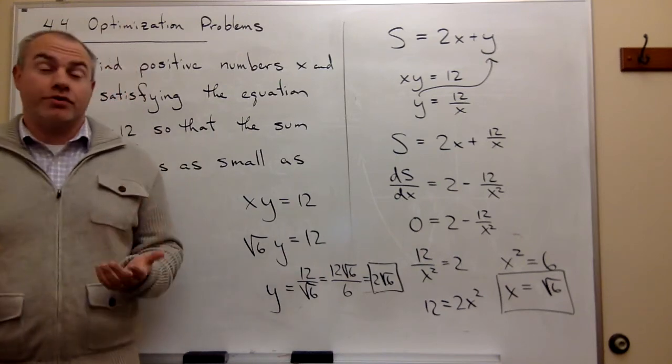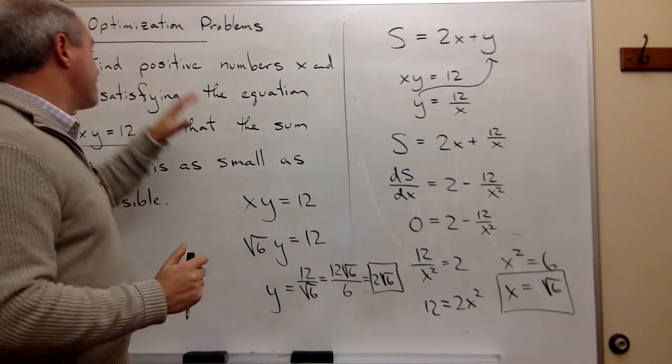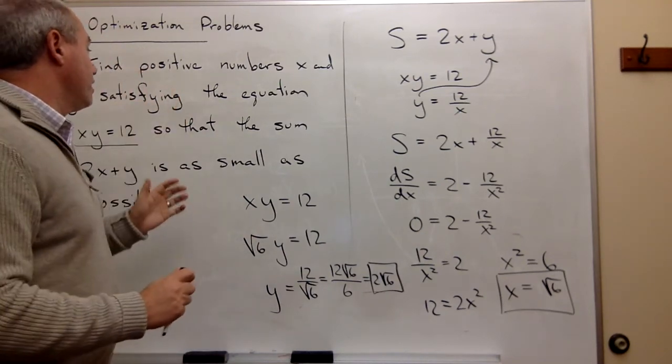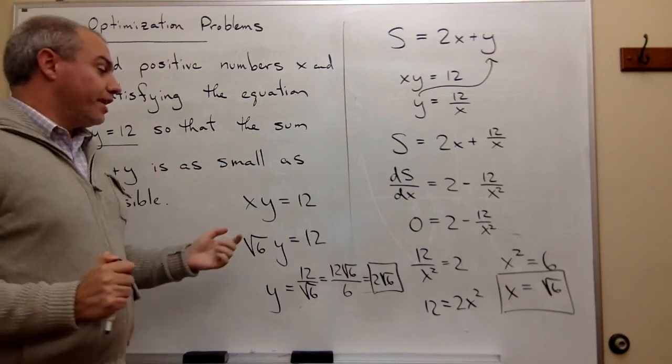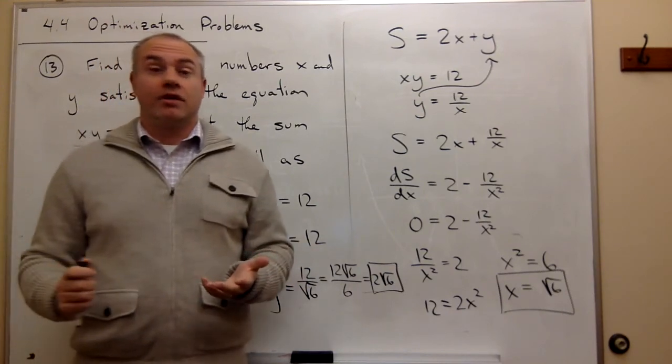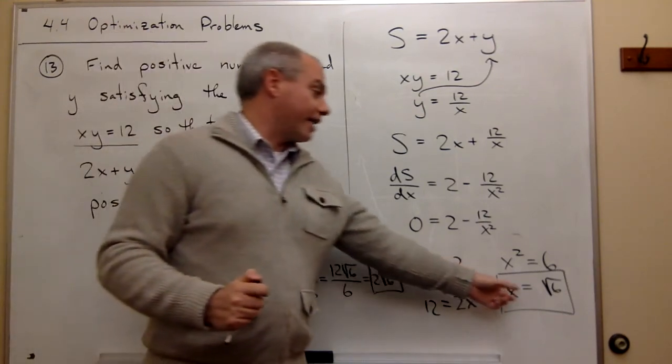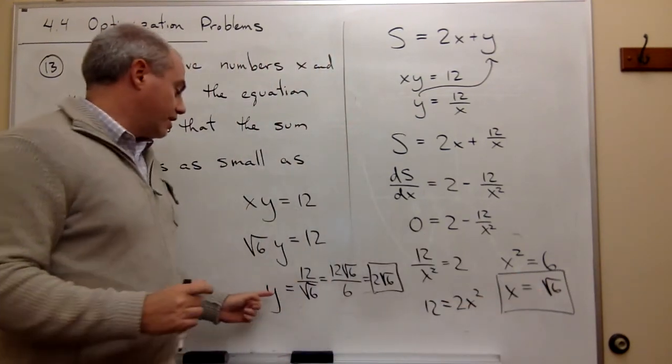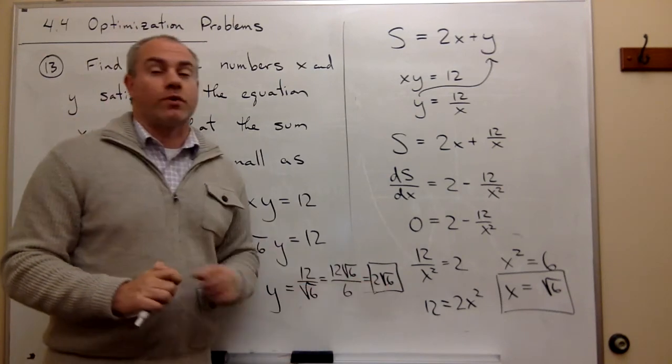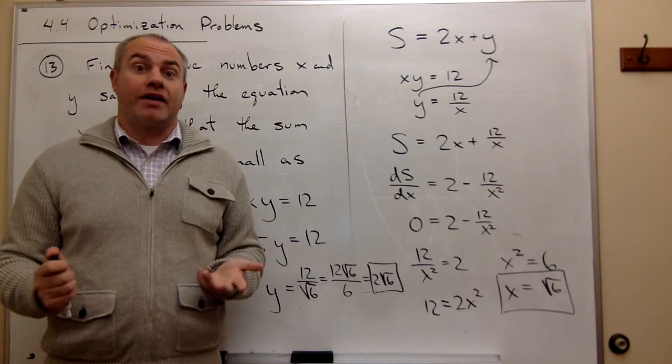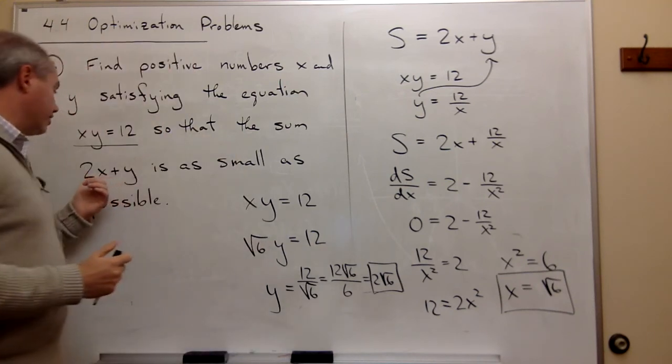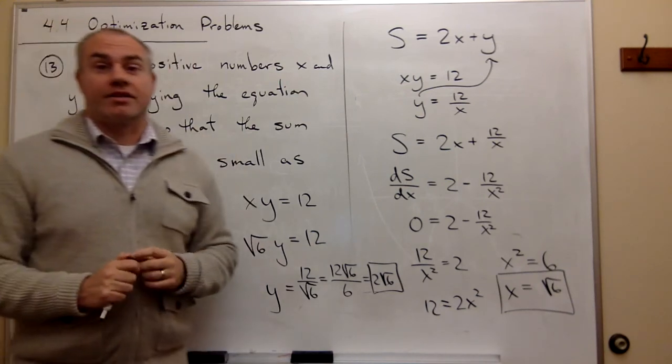Since this is the only critical value and I know that somewhere in here this thing must have a minimum, then that minimum must occur at the critical value, and the critical value occurs when x is equal to √6 and where y is equal to 2√6. So I'm done, I found my x and y that make the value 2x + y as small as possible.